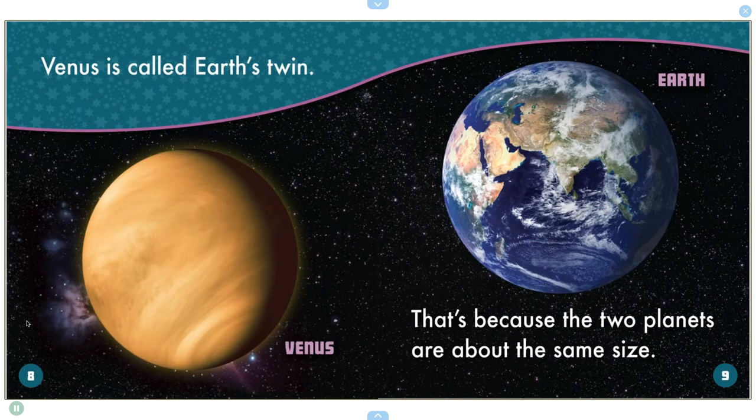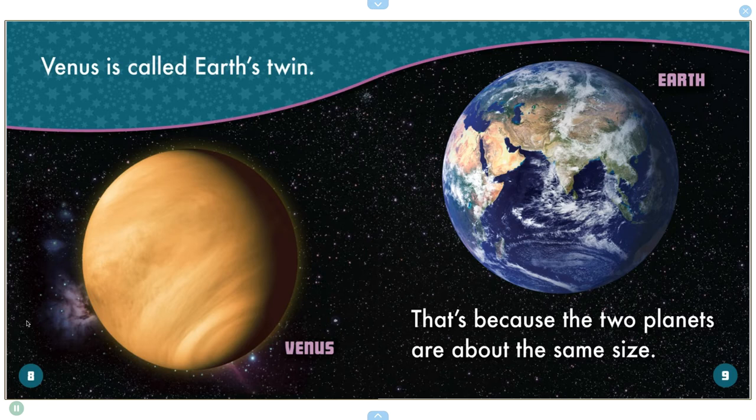Venus is called Earth's twin. That's because the two planets are about the same size.